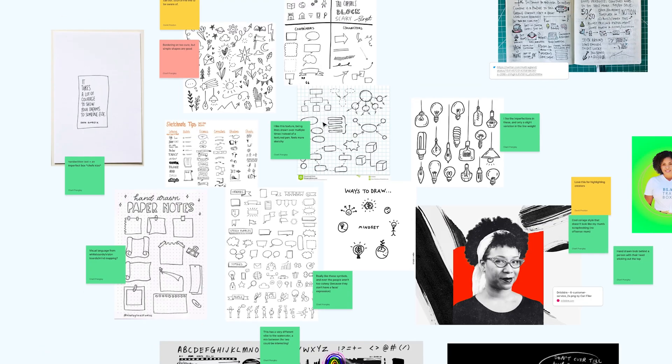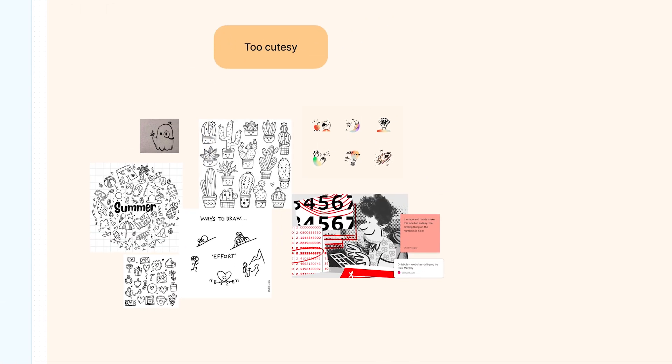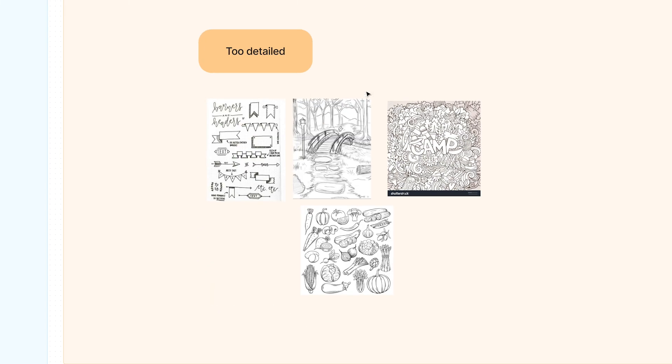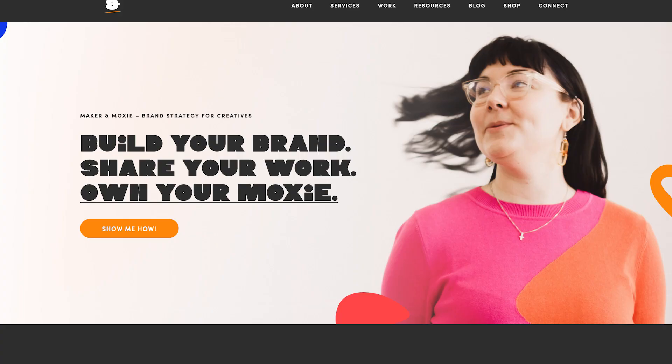I put together a mood board that summed up the style I wanted to go for — kind of a sketchy, hand-drawn style. I also noted the things we wanted to avoid, because when I say sketchy and hand-drawn, it could easily stray into being too cute, too textured, or too detailed. I got feedback from all the other designers on the team, as well as from our CEO, and once we were aligned on the direction, I started working with Holly Arnett, a graphic design contractor and talented illustrator, with her own business called Maker and Moxie.